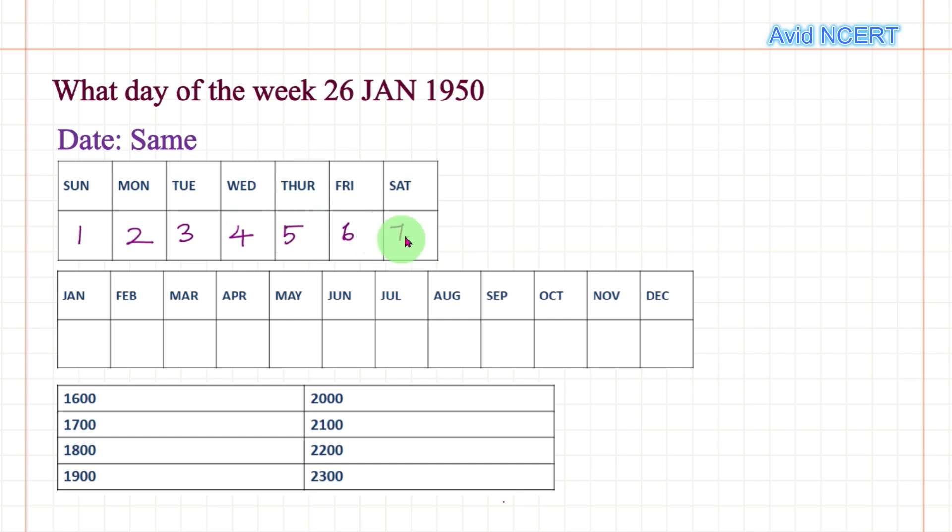For month it is January, February, March, and so on. It goes like 1, 2, 0, 4, 4, 5, 0, 2, 5, 0, 3, 6.